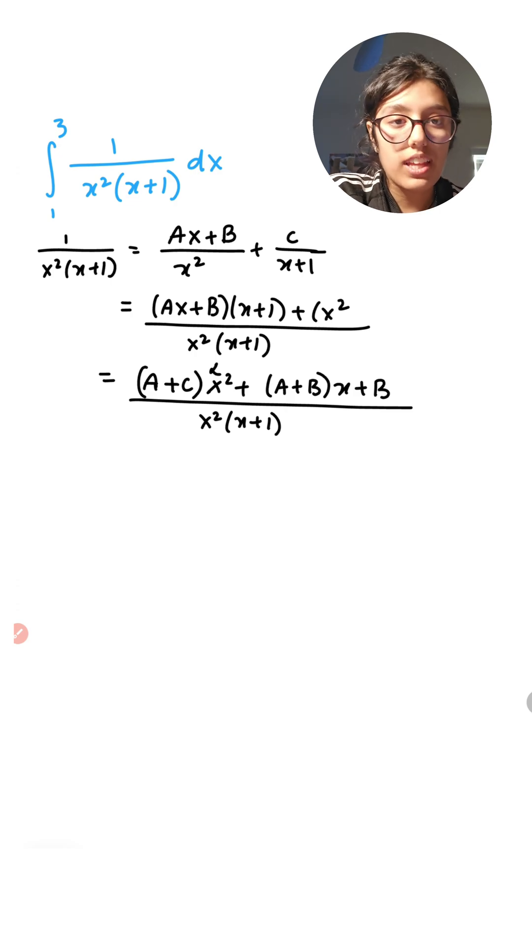And the reason I did that is because now I can correlate from the left side to the right side. What do I mean by that? Well, I noticed that on the left side we just have a one. There is no x squared and there is no x, meaning that the coefficient of x squared and x is zero.